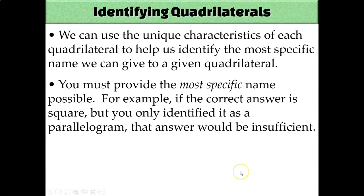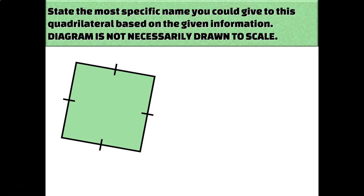Our goal for this lesson is to provide the most specific name possible for each of these quadrilaterals. Technically you could just say that each of them is a quadrilateral and you wouldn't be wrong, but you're not being specific enough. Looking at each of these diagrams — which are not necessarily drawn to scale — we're going to identify the most specific name we can give to each quadrilateral.